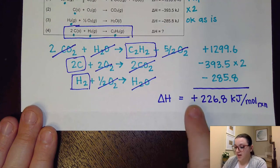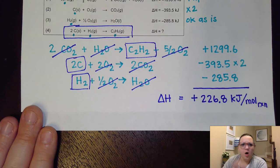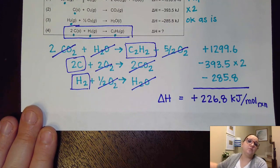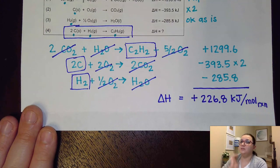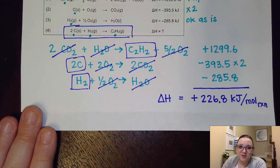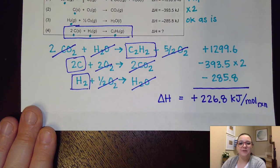Keep in mind that once I know this has a positive delta H value, I know all kinds of other things about this reaction: it's endothermic, it will feel cool to the touch, it's transferring energy in from the surroundings into the system, the potential energy of the products is higher than the reactants, I could draw a potential energy diagram, and I could calculate with it using stoichiometry. There's all kinds of things I can do with this value now that I have it — the trick is I had to find it first. I hope we're feeling good about using Hess's law to calculate heat changes of reactions. If you have any questions or need any help, please feel free to email me.